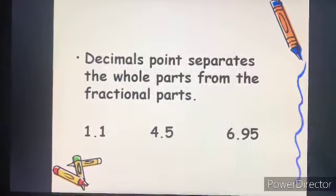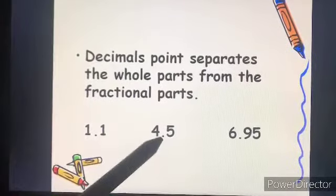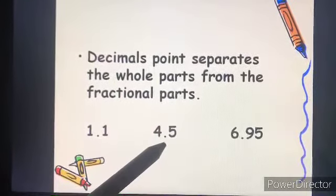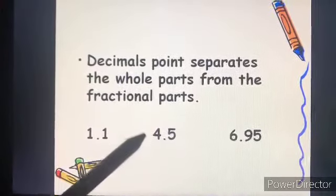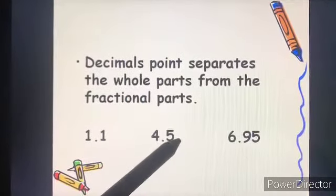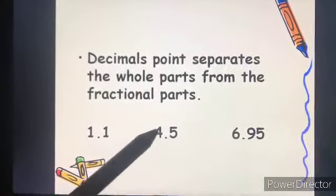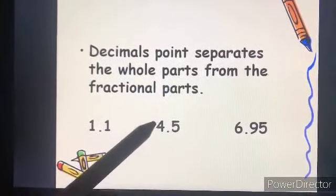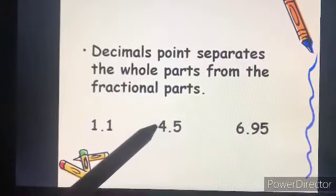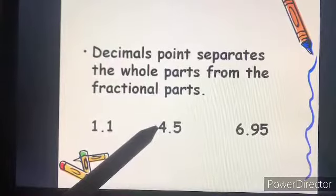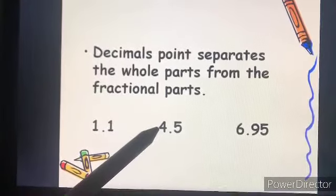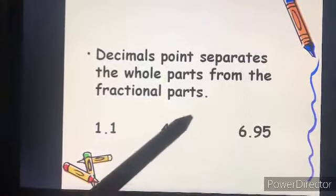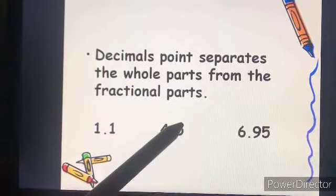So what is a decimal point? This dot is a decimal point. The decimal point separates the whole part from the fractional part. Just keep in mind that the digit before this point is the whole number, and the digit that comes after the decimal point is the fractional part.